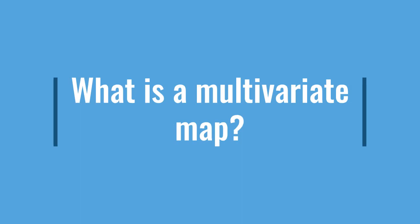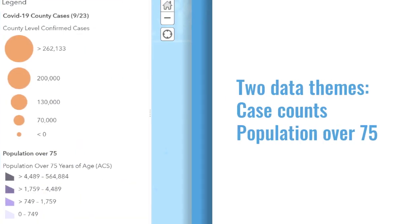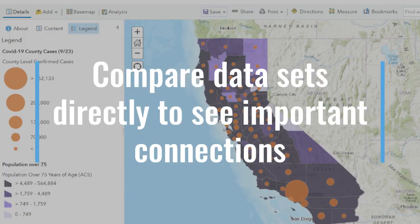Let's break that down a little. What is a multivariate map? A multivariate thematic map combines two data themes together into one map. Let's take a look at our legend. You can see our two different data themes — case counts and population over 75 — have two different symbols in the legend. Multivariate maps help us to compare different sets of data directly, and this often helps us see important connections.